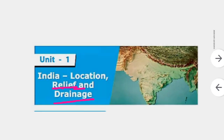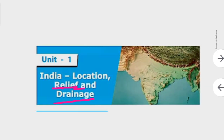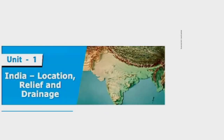The drainage system refers to the river system mixing with the ocean water - that is the drainage. Location means where India is located - it is located in the north eastern hemisphere. Today we are going to learn about location only.